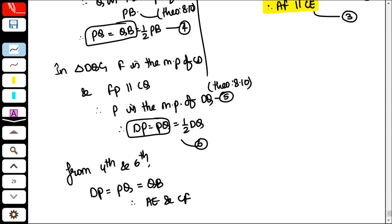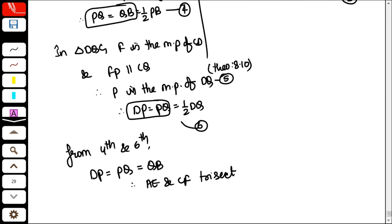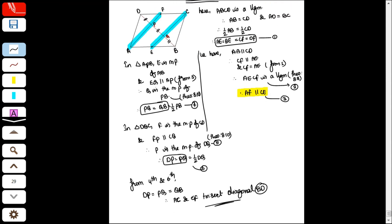Therefore, AE and CF trisect. AC and EF trisect. Understood? Go through it.